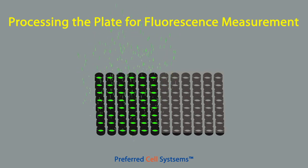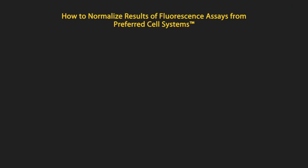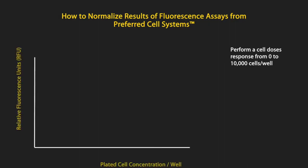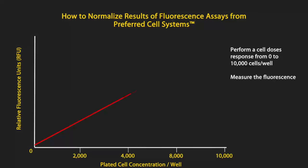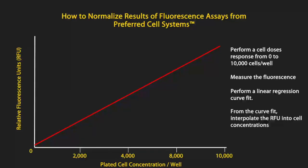Don't forget to subtract the background value from all of the sample values. The assay can be normalized by performing a cell dose response curve in parallel with the samples being measured — always include a zero-cell control. A typical cell dose response curve may include cell concentrations from 250 cells to 10,000 cells per well, each in 0.1 milliliters of total volume. The cell dose response will be fitted to a linear regression curve, and the relative fluorescent units (RFUs) obtained for the samples can then be interpolated as live cell concentrations.